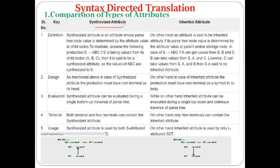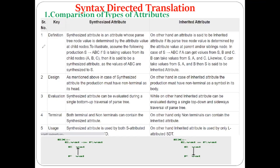This is the comparison between synthesized attributes and inherited attributes that you studied last time. Using different key points, we compare the synthesized attribute and the inherited attributes. The synthesized attribute is the attribute whose parse tree node value is determined by attribute values at the child nodes. The attribute whose value is calculated with the help of child nodes is referred to as a synthesized attribute. For example, if you have the production S derives ABC and S is taking value from child node A, B, or C, then S is said to be the synthesized attribute.